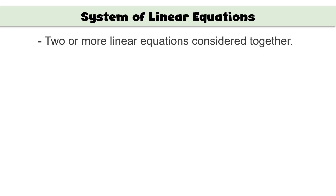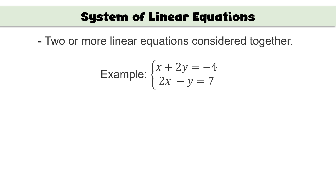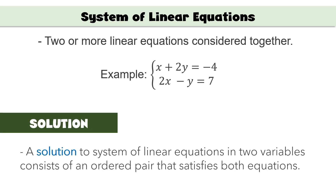A system of linear equations consists of two or more linear equations considered together. For example, x plus 2y equals negative 4 and 2x minus y equals 7. This is how we write a system of linear equations. The solution is the term we use for the answer we get from the system of equations.